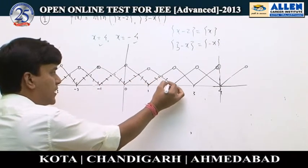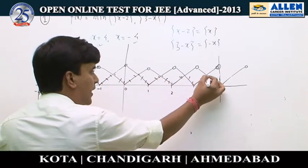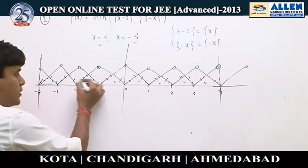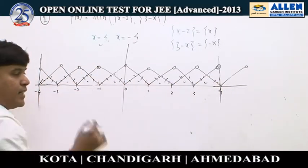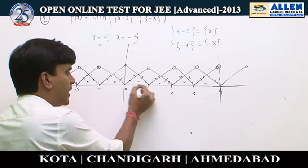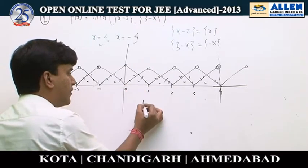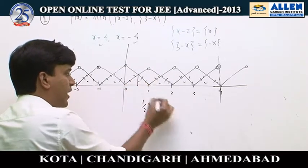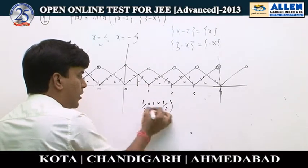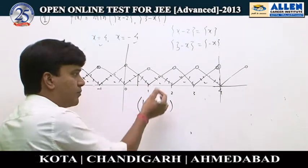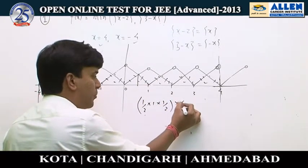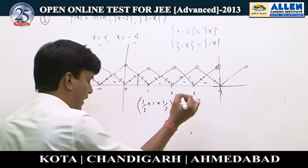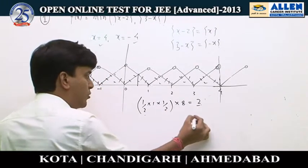We can see there are in total 8 triangles. The area of each triangle is going to be ½ × 1, and the height is going to be ½. So the total area from these 8 triangles is ½ × ½ × 8, which gives us 2. So the correct answer is C.